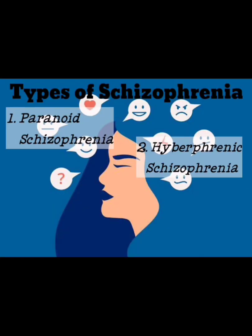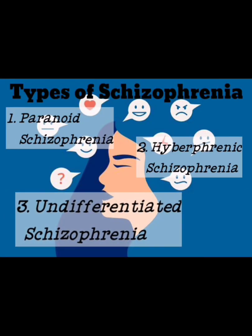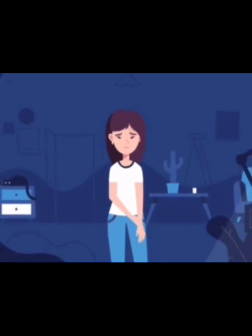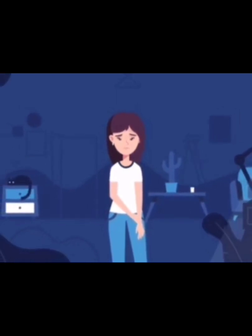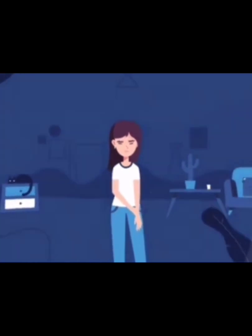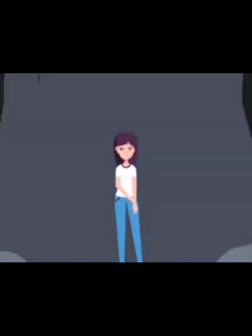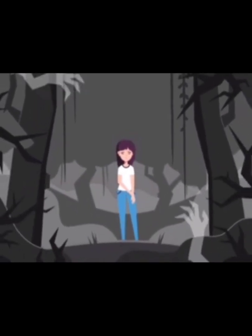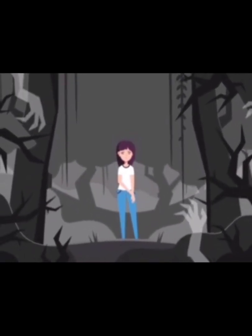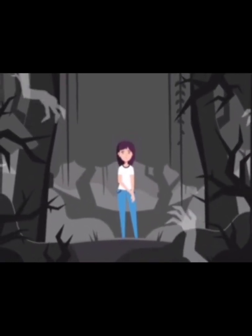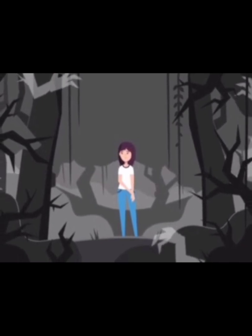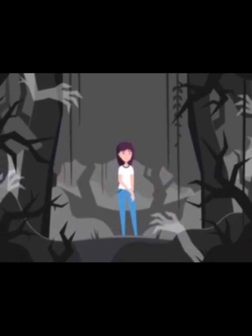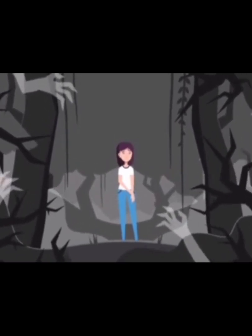Then comes undifferentiated schizophrenia. In this type, the patient has characteristics of paranoid, hebephrenic, or catatonic schizophrenia but does not obviously fit into any one category alone, so it is classified as the undifferentiated type.